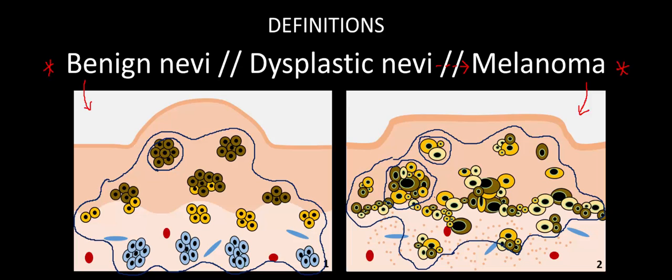The second feature to compare these two lesions on is the degree of cellular irregularity, or atypia. In the benign nevus, these melanocytes are fairly similar in shape and the nuclei are all the same size, which is in direct contrast to what's going on with this melanoma. Notice here that these melanocytes are all different shapes and sizes.